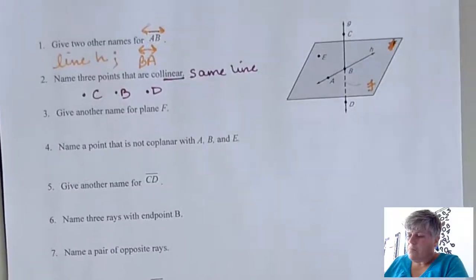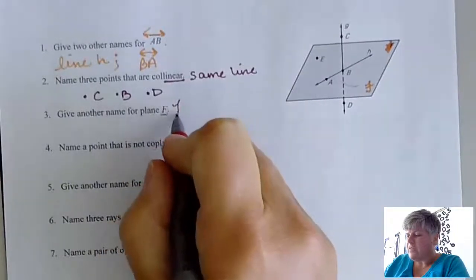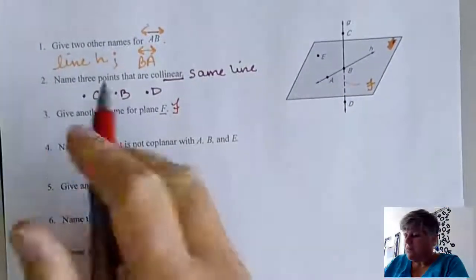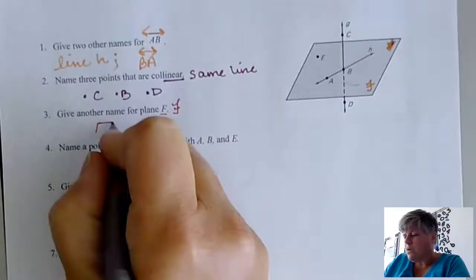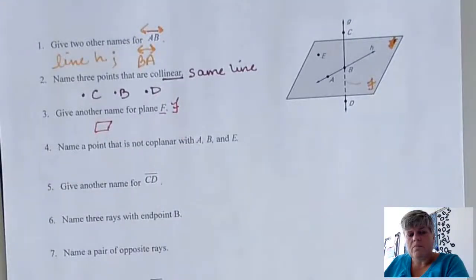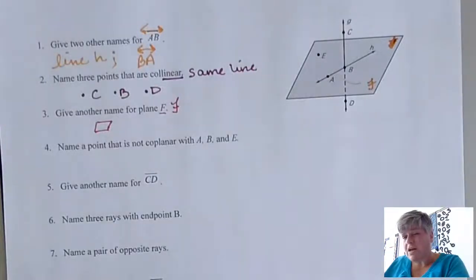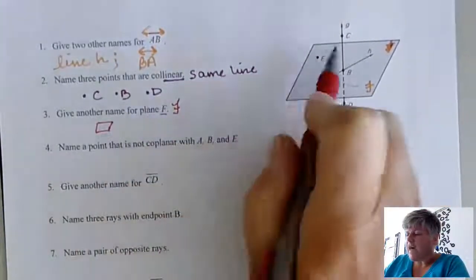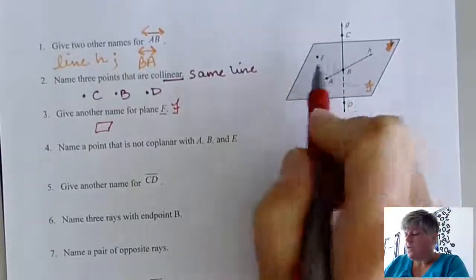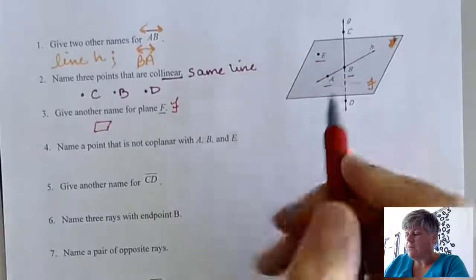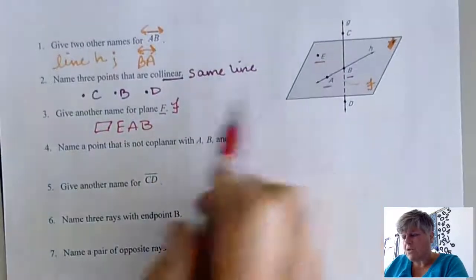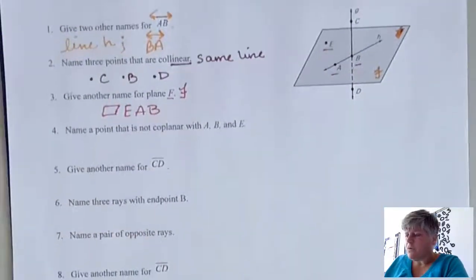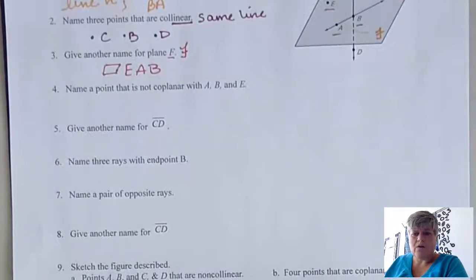Another name for plane F. Remember I changed that to that kind of cursive F to make it scripted, kind of scripty because that's what they like. But another name for a plane is we're going to use three points that are non-collinear. Remember collinear means on the same line, non-collinear means they are not on the same line. And so three points that are non-collinear in that plane. So inside of this gray area we've got point E, point A, and point B. Yes, A and B are on the same line, but E is not. So those are non-collinear points. So that is how we could also name that plane F.